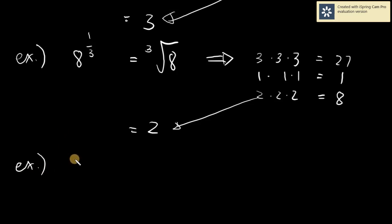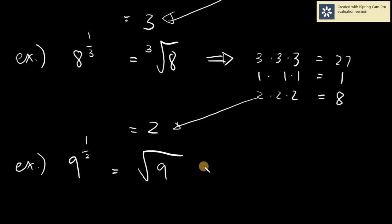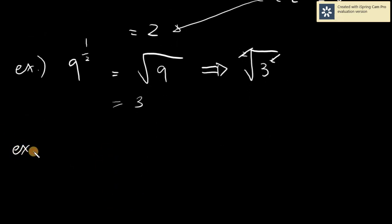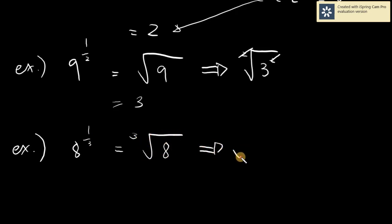Another way of solving: for nine raised to one half, the square root of nine — note that nine is also equivalent to three squared. So we have the square root of three squared. Since the index two and the exponent two match, we can cancel them out and the answer is three. Similarly, eight raised to one third equals the cube root of eight, which equals the cube root of two cubed. Since the index and exponent match, we cancel and get two.